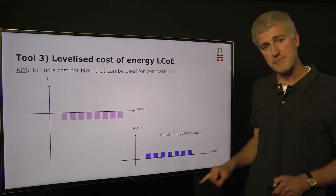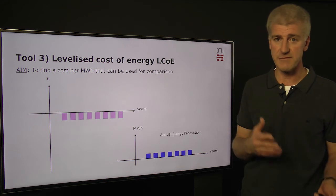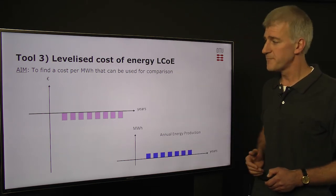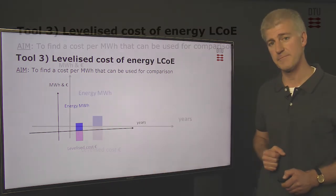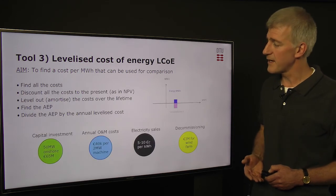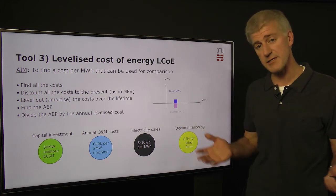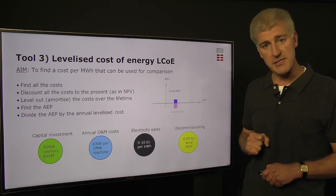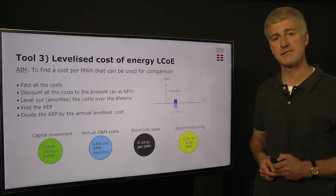We then need the annual energy production. We have a figure for each year of production that is the same — we know it's going to vary up and down, but for these economic calculations we use an average value. When we have the levelized costs and the production figure, we can put them together to get the levelized cost of energy. To summarize the steps: find all the costs, discount them to the present day just as in the net present value, level them out over the lifetime of the wind farm, find the annual energy production (AEP), and divide the AEP by the annualized levelized cost to get the levelized cost of energy for the project.